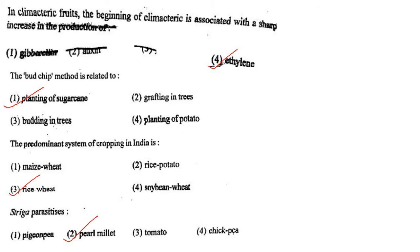Next one: In climacteric fruits, the beginning of the climacteric is associated with a sharp increase in the production of option 1, gibberellin; option 2, auxin; option 3, abscisic acid; option 4, ethylene. Answer is option 4: ethylene.